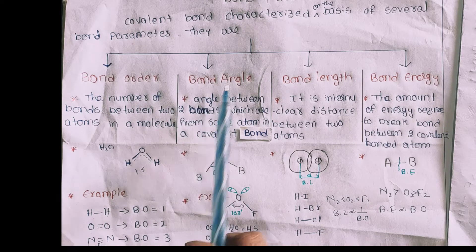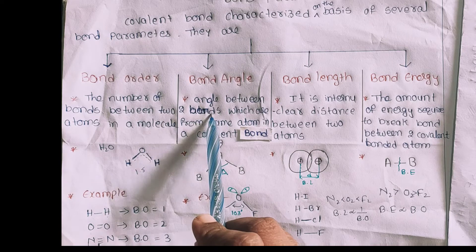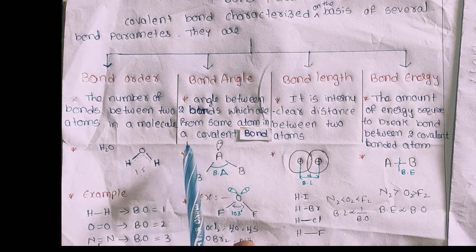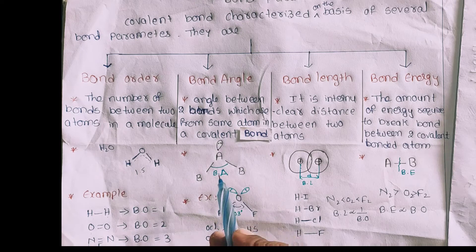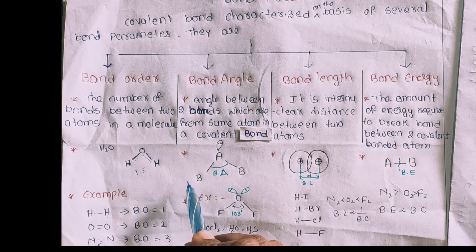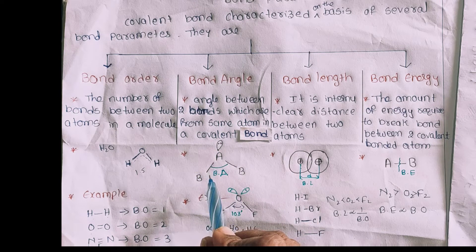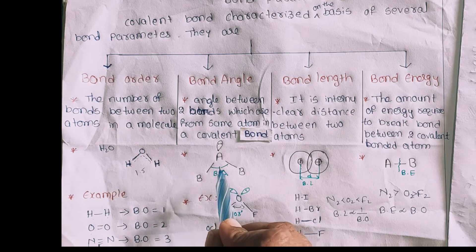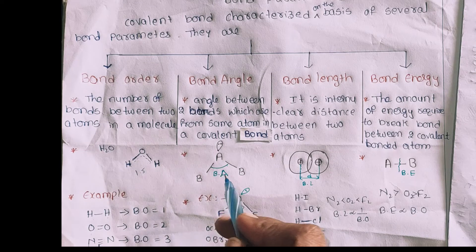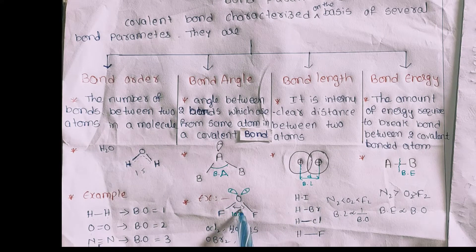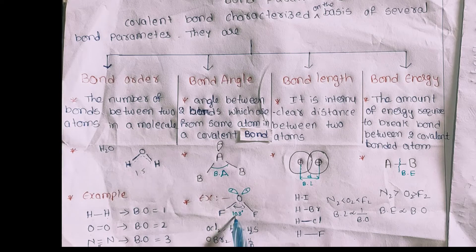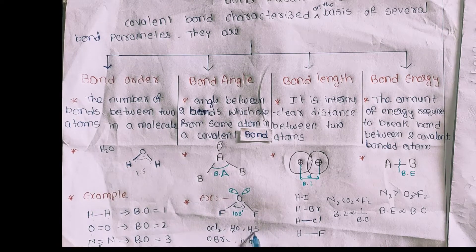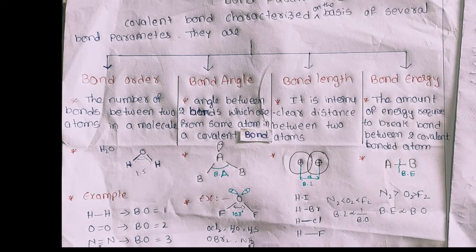Next, Bond Angle. Bond angle is the angle between two bonds which are formed from the same atom in a covalent bond. For example, molecules such as F2, Cl2, H2O (water), H2S, and Ammonia all have characteristic bond angles.